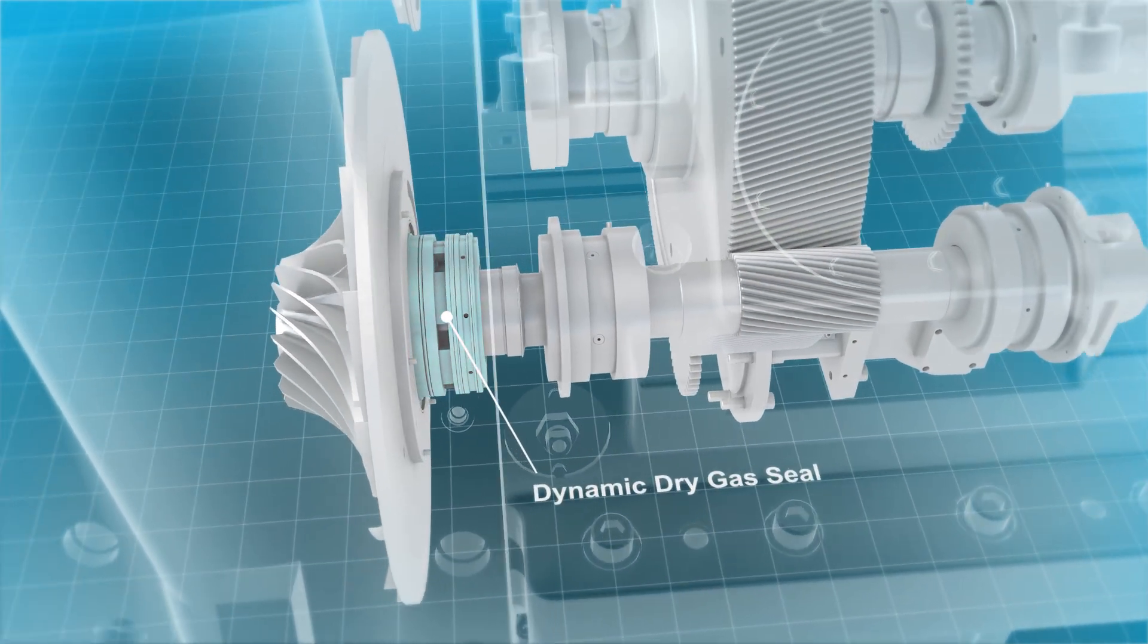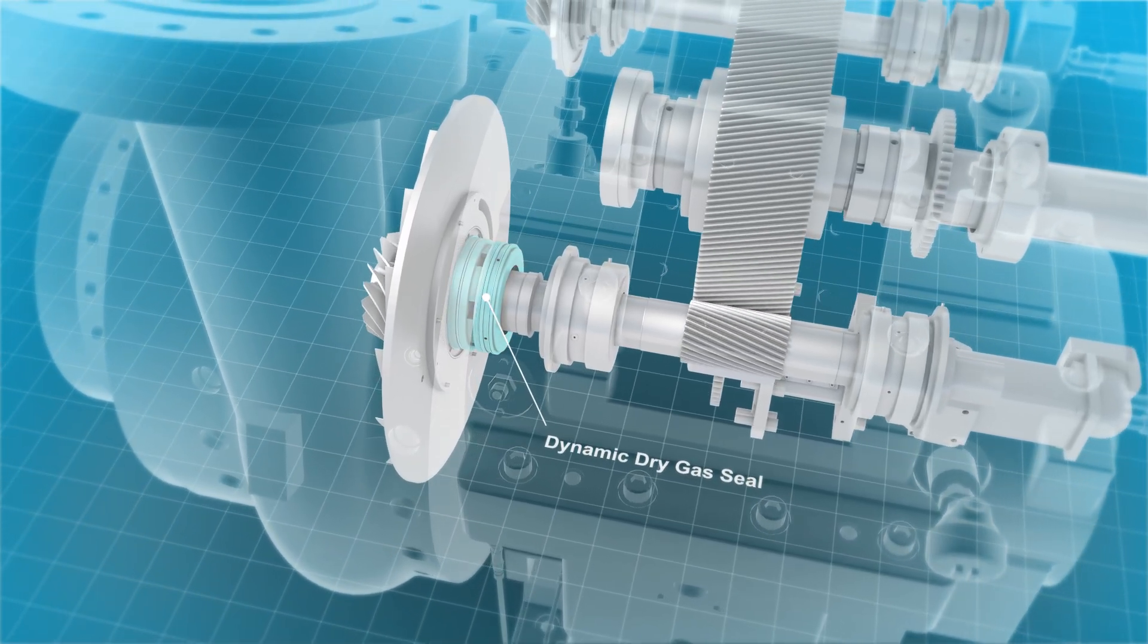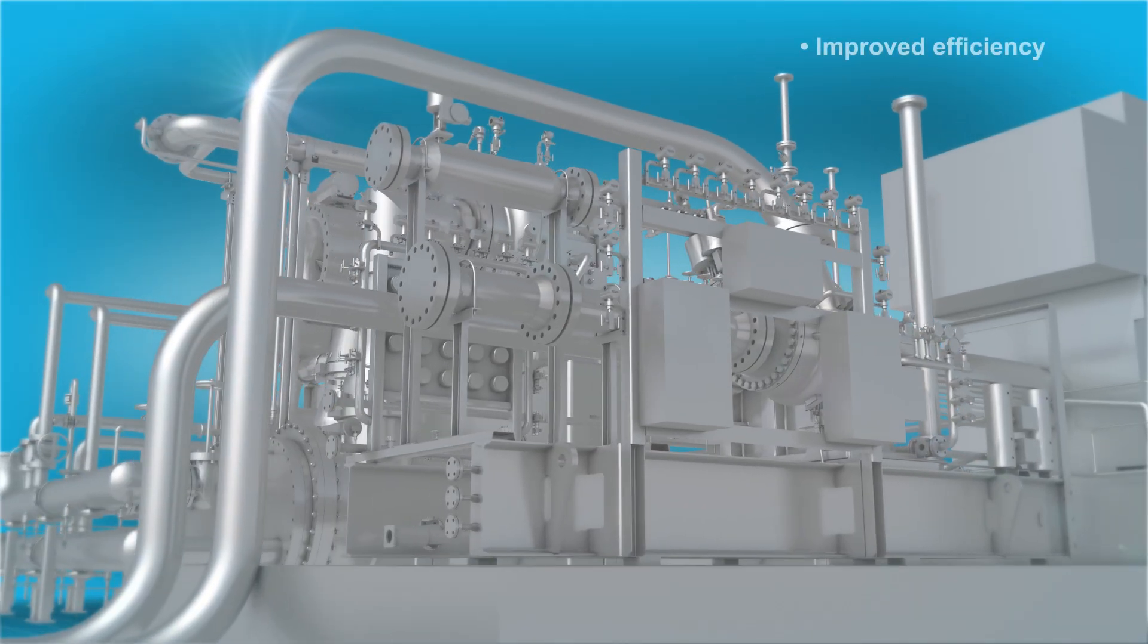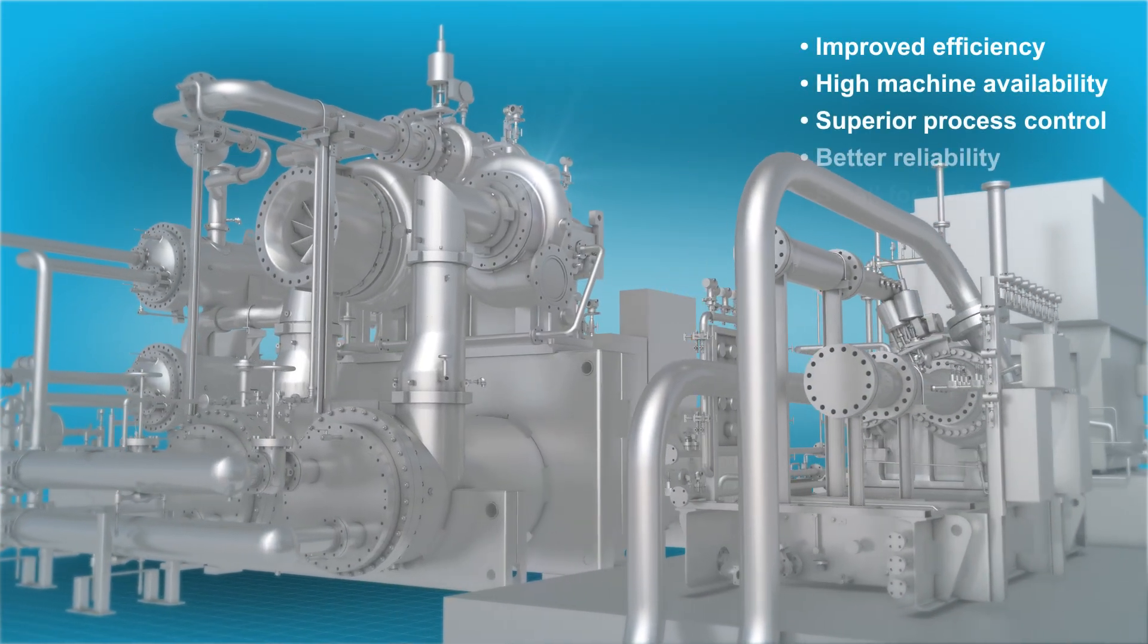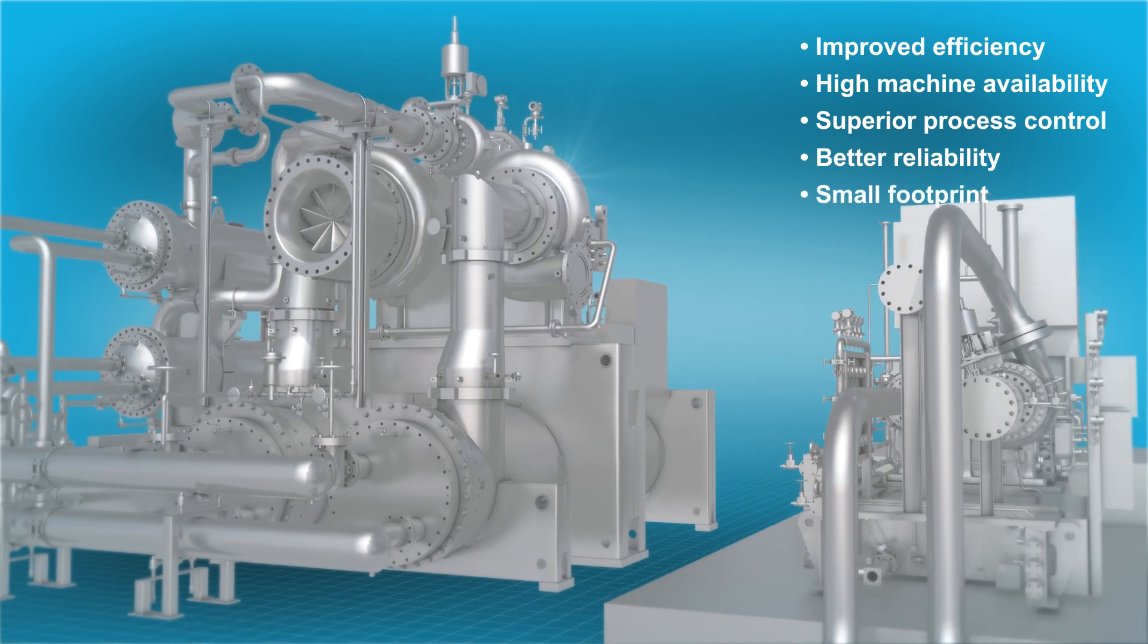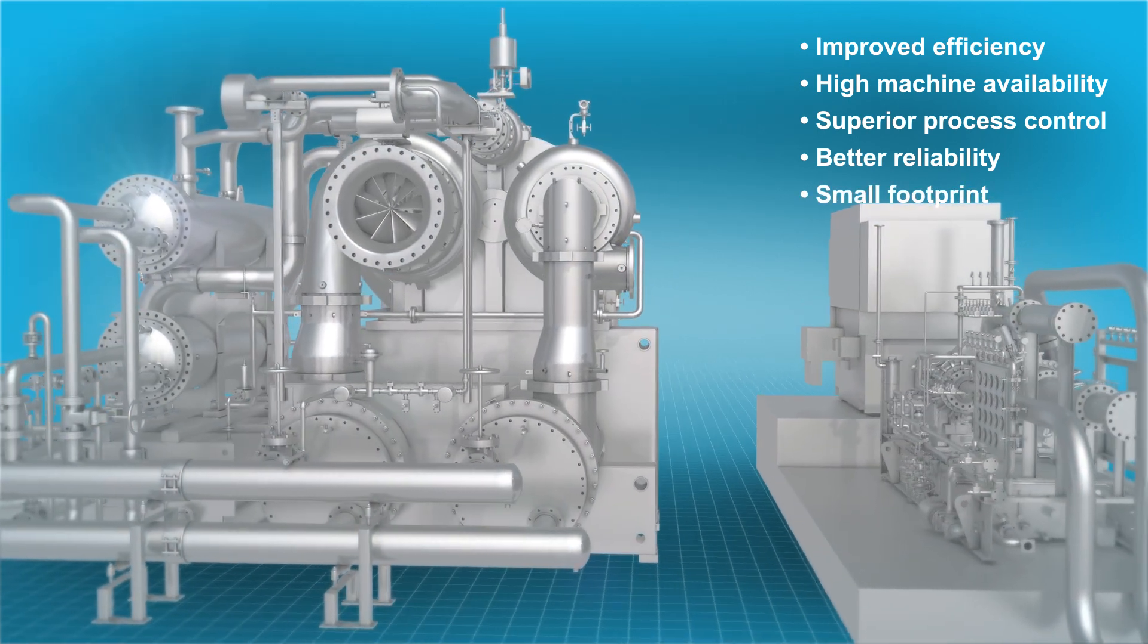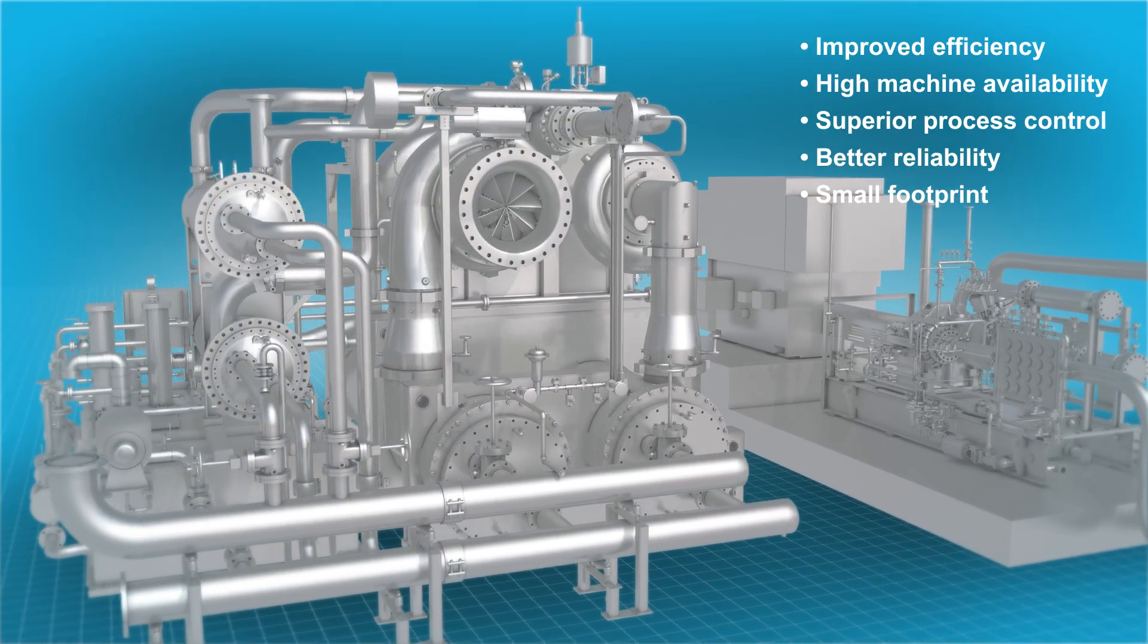In fact, Atlas Copco was the first compressor manufacturer to implement dry gas seals on integrally geared compressors. Packing efficiency, high machine availability, and superb process control onto a small footprint, Atlas Copco integrally geared compressors give your process the extra edge in a variety of applications across many industries.